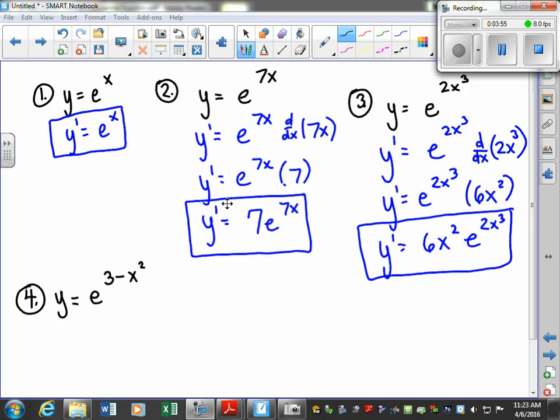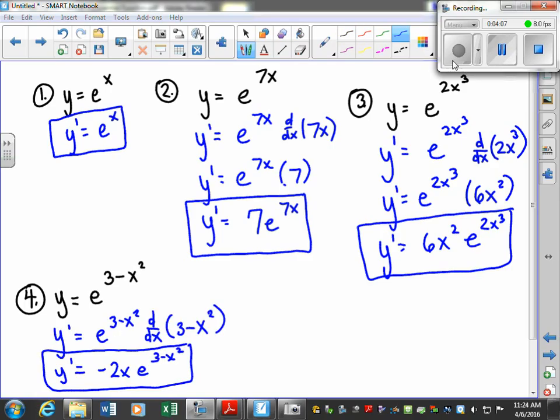Okay, we'll squeeze number 4 over here. The only thing I want you to see is this is two terms up here. One term, two terms. You're still going to work it up. Go ahead and work this and then you can pause it and check your answer. Okay, good. So the derivative of this is the negative 2x e and then you have 3 minus x squared.